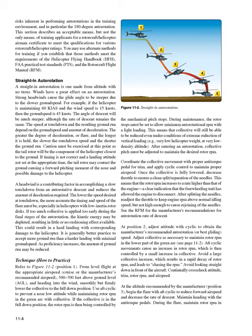Technique — how to practice (refer to figure 11-2, position 1): From level flight at the appropriate airspeed, 500–700 feet AGL, and heading into the wind, smoothly but firmly lower the collective to the full-down position. Use aft cyclic to prevent a nose-low attitude while maintaining rotor RPM in the green arc with collective. If the collective is in the full-down position, the rotor RPM is then being controlled by the mechanical pitch stops.